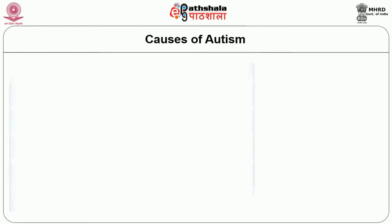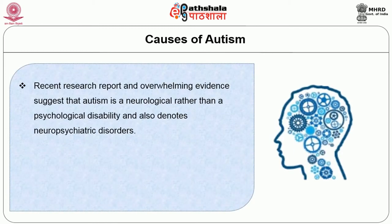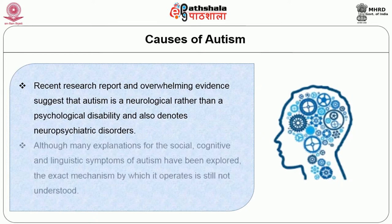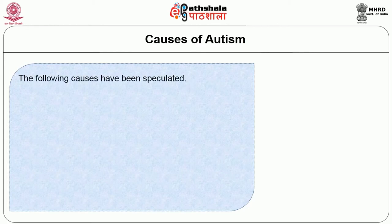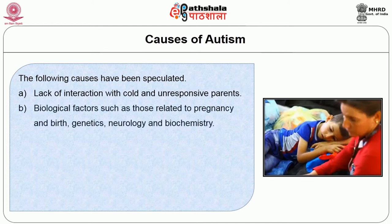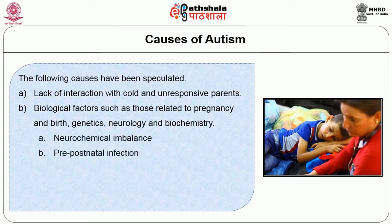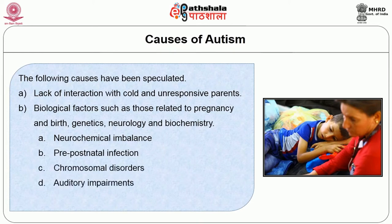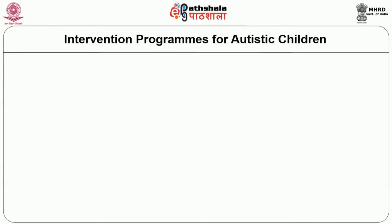Recent research and overwhelming evidence suggests that autism is neurological rather than a psychological disability, and also denotes neuropsychiatric disorders. Although many explanations for the social, cognitive and linguistic symptoms of autism have been explored, the exact mechanism is still not fully understood. Speculated causes include lack of interaction with cold and unresponsive parents, biological factors related to pregnancy and birth, genetics, neurology, neurochemical imbalance, pre and postnatal infections, chromosomal disorders, auditory impairments and central nervous system dysfunction.